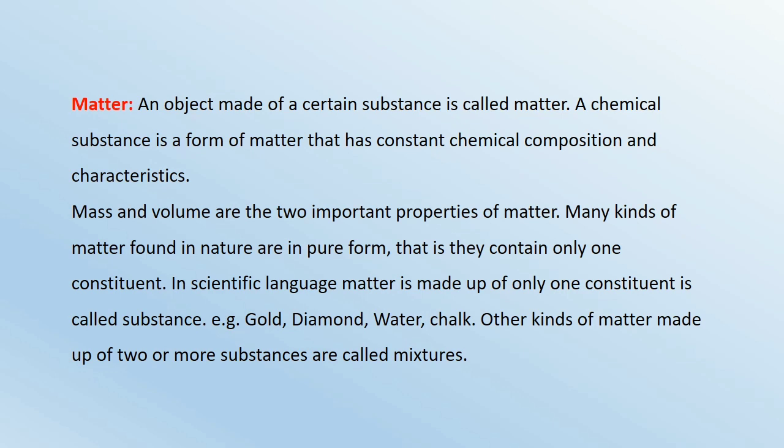Matter: An object made of a certain substance is called matter. A chemical substance is a form of matter that has constant chemical composition and characteristics. Mass and volume are the two important properties of matter. Many kinds of matter found in nature are in pure form, that is they contain only one constituent. In scientific language, matter made up of only one constituent is called a substance, for example: Gold, Diamond, Water, Chalk. Other kinds of matter made up of two or more substances are called mixtures.